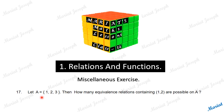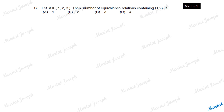Let A be the set {1, 2, 3}. Then how many equivalence relations containing the pair (1, 2) are possible on set A? Is it 1, 2, 3, or 4?